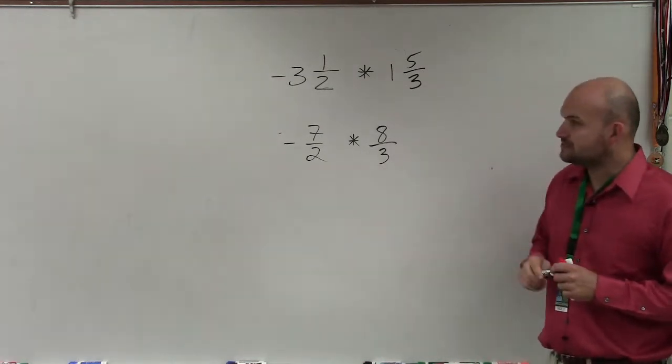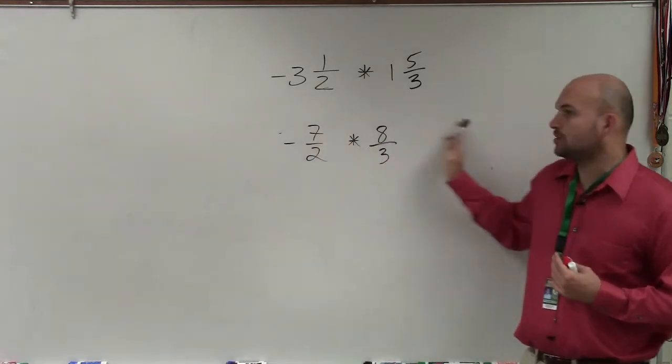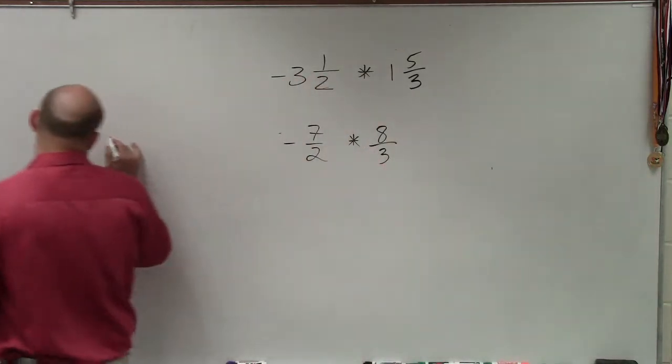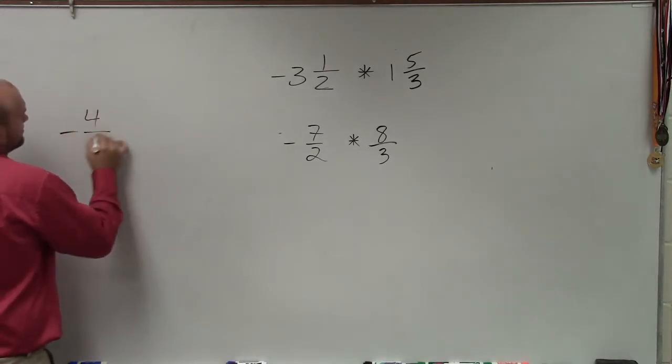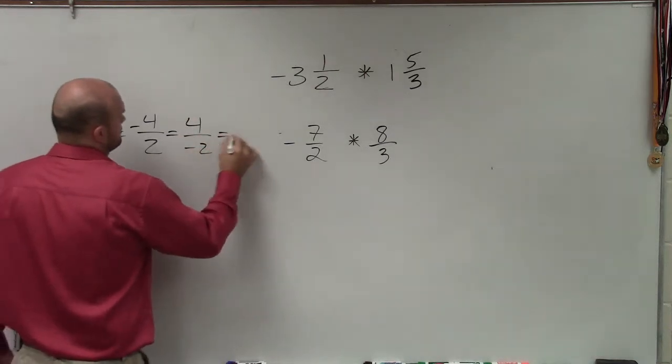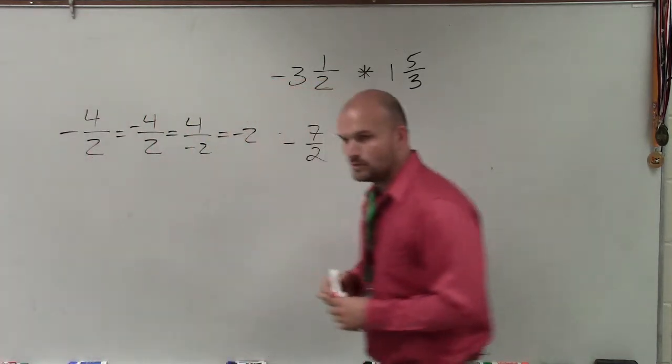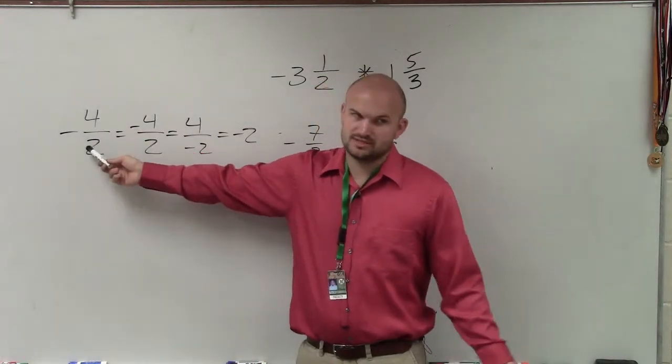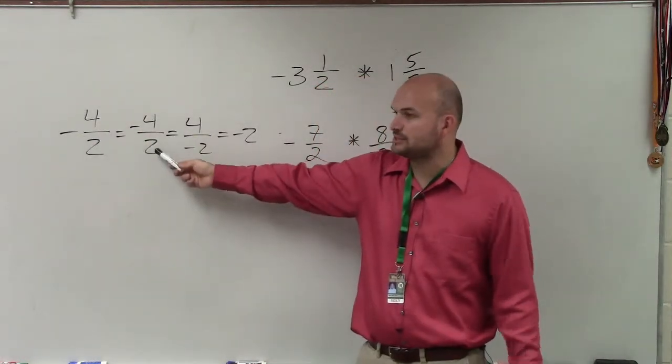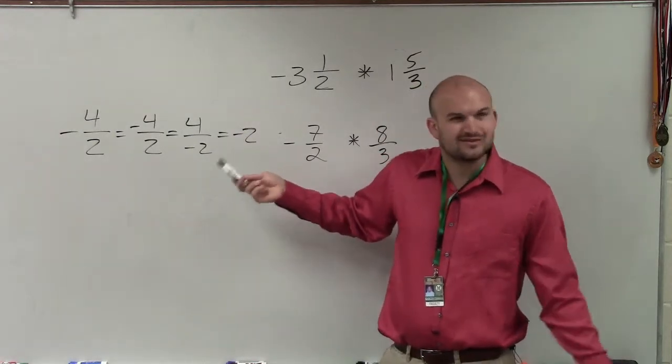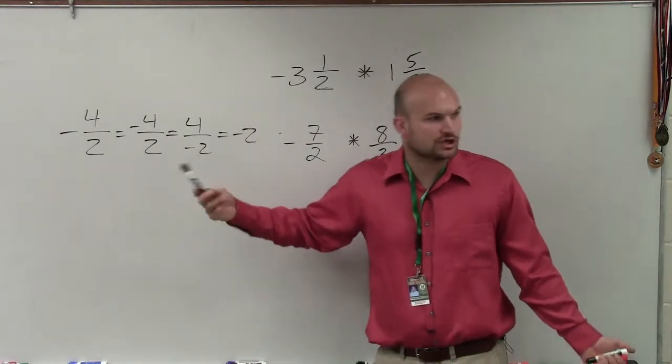So in this case, when you're multiplying, all you simply do is multiply across. The negative sign doesn't really matter where it's at. The way I explain it, it doesn't really matter, guys, where you put that negative sign. Negative 4 over 2 is negative 2. Negative 4 divided by 2 is negative 2. 4 divided by negative 2 is also negative 2. So it doesn't really matter. Don't get concerned with that.